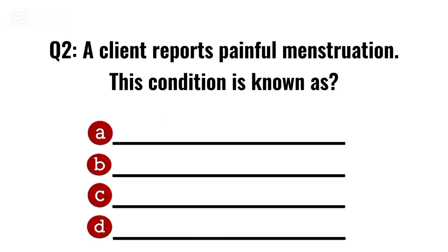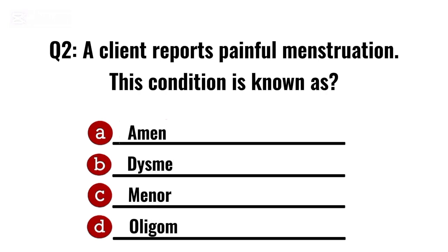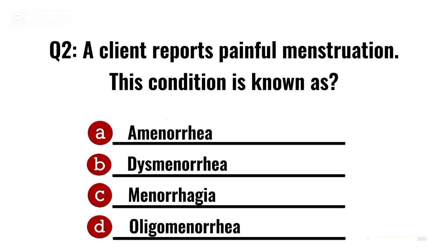Question 2. A client reports painful menstruation. This condition is known as? Correct option B: Dysmenorrhea.